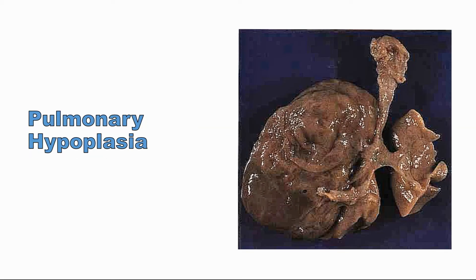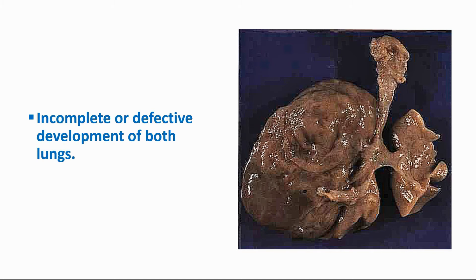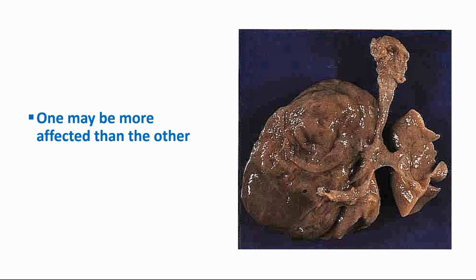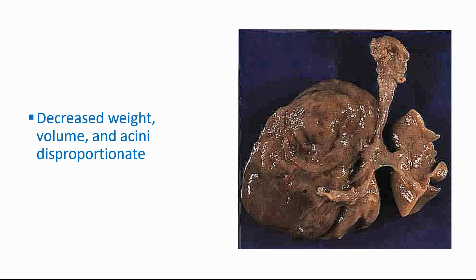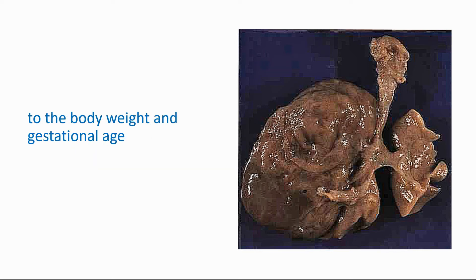So let's go to pulmonary hypoplasia. What is pulmonary hypoplasia of the lung? This means incomplete or defective development of both lungs. Maybe one lung may be affected more than the other, or the lesion may involve only one lung, but in the majority of cases both lungs are involved. This leads to decreased weight, volume, and DNA disproportionate to the body weight and gestational age.